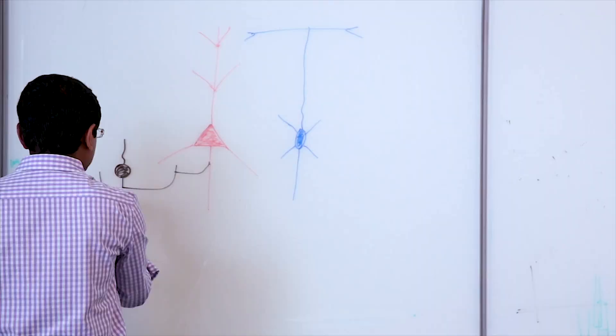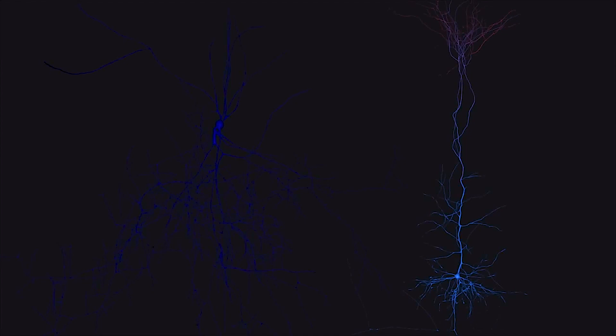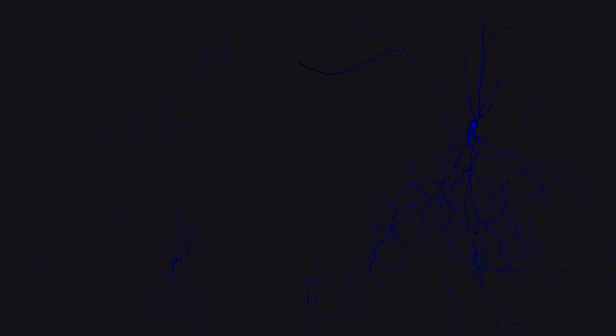We have a complicated system that we want to understand, and the way to understand a complex system is to build it step by step — each step of building is a step of understanding. For example, we know that there are cell types, but we don't know how many cell types. One process of understanding through our project was to objectively characterize 11 electrical cell types, each with its own firing pattern. This is a step in understanding.